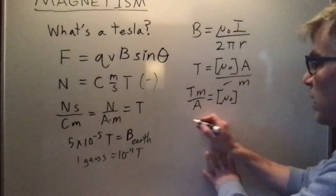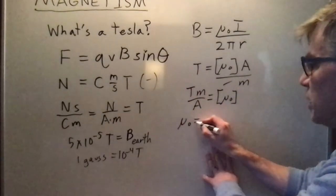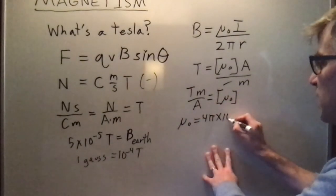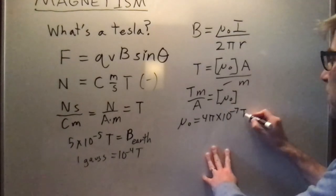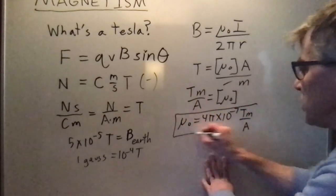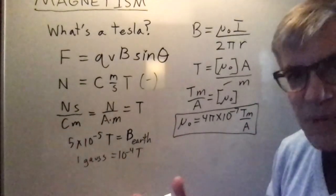And the number value is that mu zero is four pi times ten to the negative seven tesla meter per amp. That's the number that says how strong magnetism is.